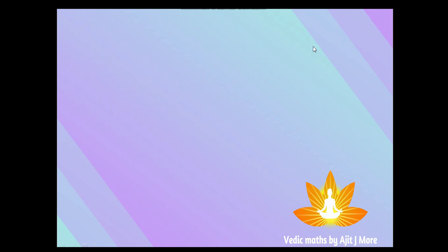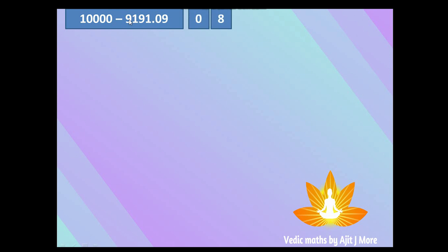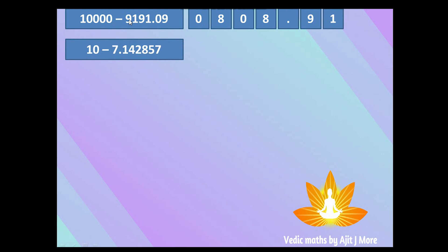Next example: 10000 minus 9191.09. There are four zeros and four digits before the dot, so we directly apply the Nikhilam rule. 9−9=0, 9−1=8, 9−9=0, 9−1=8, dot as-is, 9−0=9, 10−9=1. The complement is 0808.91.